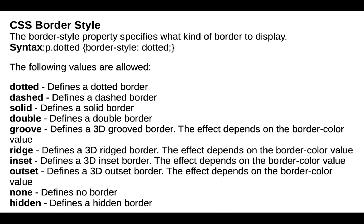The CSS border style property specifies what kind of border to display. For example, border styles include dotted, dashed, solid, double, groove, ridge, inset, outset, none, and hidden. You can change any one of these values to apply a border style to an HTML element.